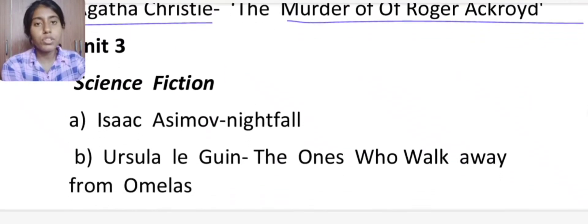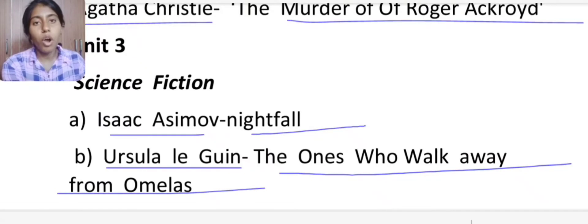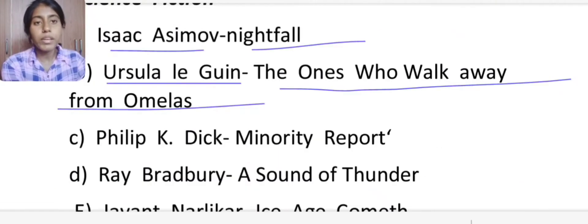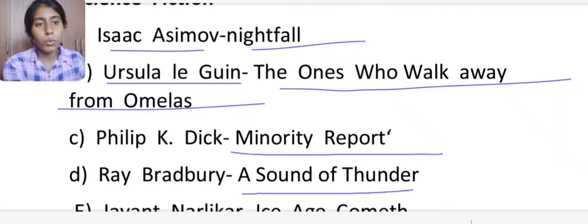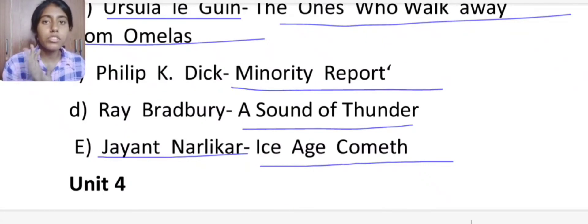Then Unit 3 is Science Fiction. You have to read Isaac Asimov's Nightfall, Ursula Le Guin's The Ones Who Walk Away from Omelas, Philip K. Dick's Minority Report, Ray Bradbury's A Sound of Thunder, and Jayant Narlikar's Ice Age Comet. These 5 you have to read under Science Fiction, Unit 3 of Popular Literature.